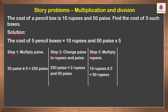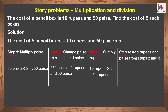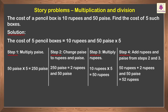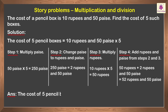Lastly, Step 4: Add rupees and paise from steps 2 and 3. So, 50 rupees plus 2 rupees and 50 paise is equal to 52 rupees and 50 paise. We found the answer. Hence, the cost of 5 pencil boxes is 52 rupees and 50 paise.